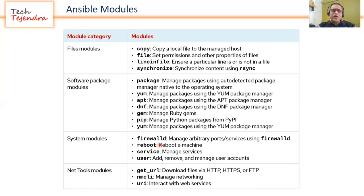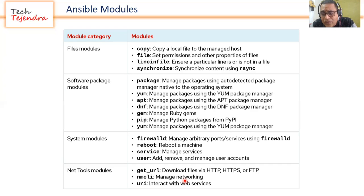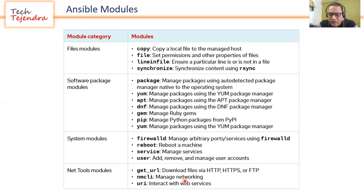Then we have system modules like firewall, reboot, service, and user. With the user module, you can add, remove, or manage user accounts. We also have net tools modules like 'get_url'. There are thousands of modules provided by Ansible. Even in the cloud world, AWS, Google Cloud, and other providers have their own dedicated modules, so you can configure your entire AWS cloud infrastructure from a single machine using the AWS cloud modules.